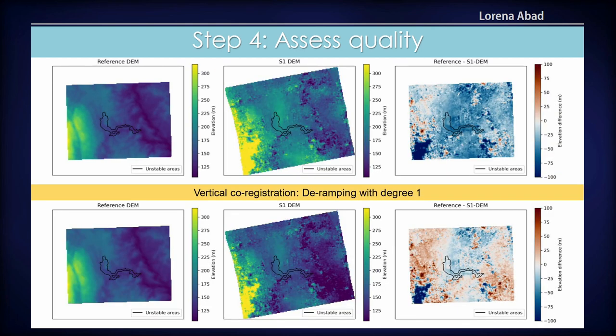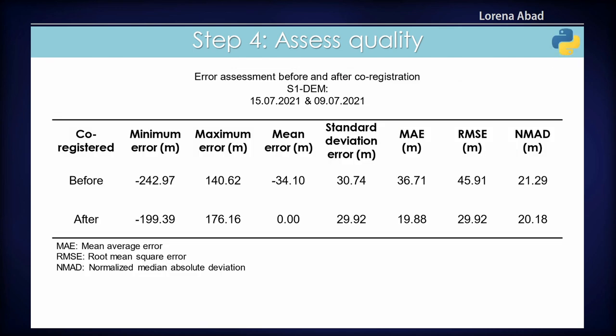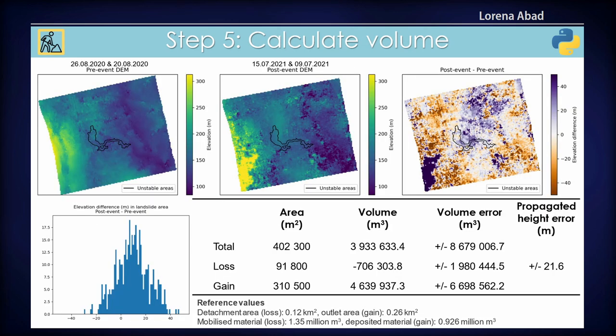With vertical co-registration against a reference DEM, you can assess alignment quality. Statistics are provided to evaluate the error. Finally, calculating volume: if you have a pre-event and a post-event DEM, you can compute the volume changing between two timestamps. You get the elevation difference and the computed numbers. This is an overestimation for this particular event, but it is meant to support systematic analysis of all DEMs computed for this area.